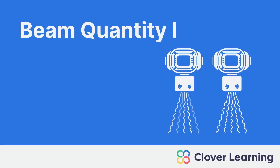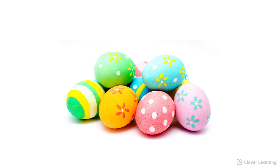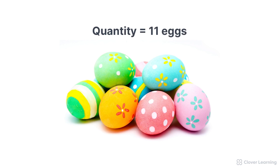Welcome back. In this lesson, we're talking about a characteristic of the x-ray beam called beam quantity. The word quantity refers to the number of something — how much or how many there is of something. For example, in this image, the quantity of eggs is about 11. Quantity is only the number, not the type or the size or the color or the quality. It's just the number.